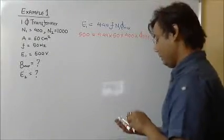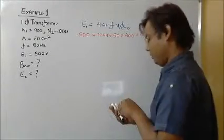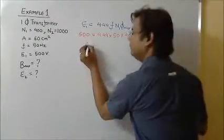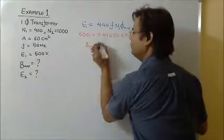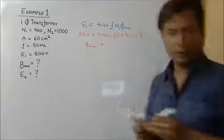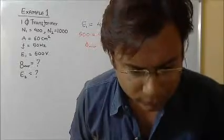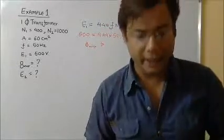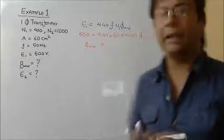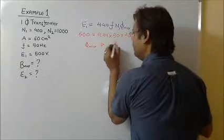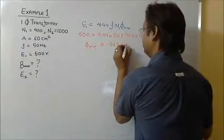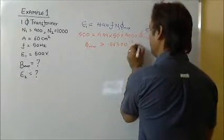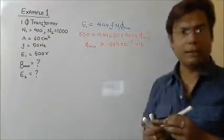So I will have φmax value as 0.563 × 10⁻² Webers.